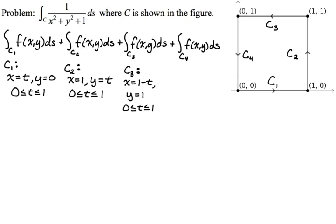Finally for c4, x is equal to 0 the entire way. And y starts at 1 and ends at 0, so delta y is negative 1, giving y equals 1 minus t. Again from 0 to 1. So those are our four paths.